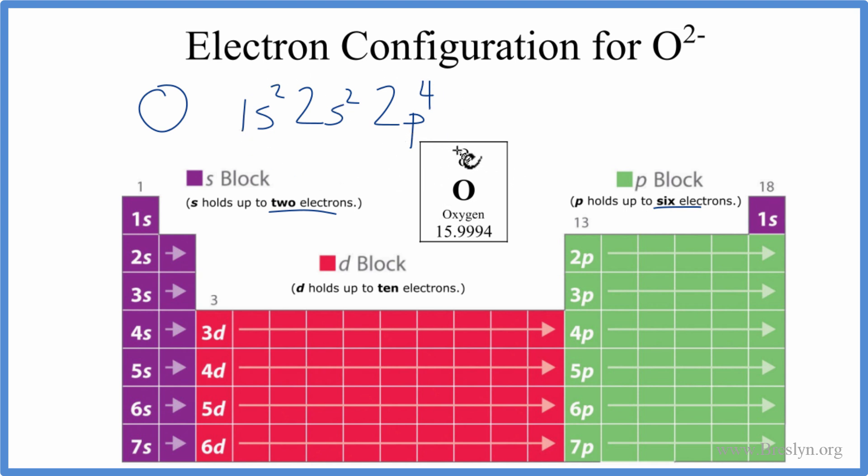So this is the electron configuration for oxygen, the neutral atom. We wanted to do the electron configuration for O²⁻, the oxide ion. When you see this negative charge, that means it's gained electrons. In this case, it's gained two electrons. So we'll just add 2 to our configuration here, and that'll give us 2p⁶. This is the electron configuration of O²⁻, the oxide ion.